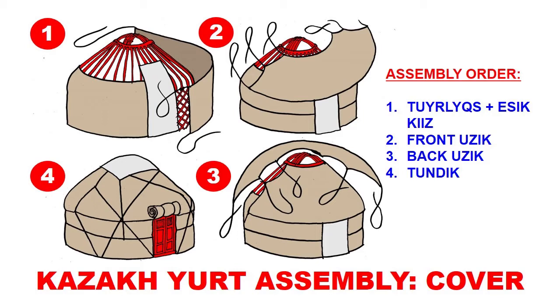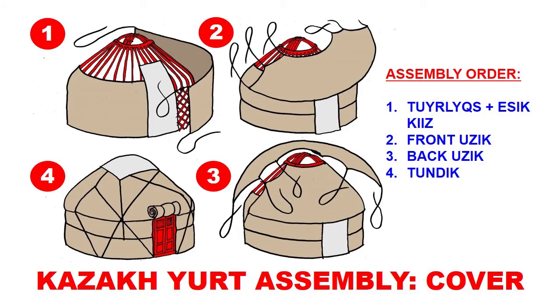Then we dress the roof pieces, starting with the front piece. Once it's tied and secured in place, we put the back roof piece, which overlaps the front piece at both ends on the left and right — so there's no opening. It overlaps securely over a good distance so no precipitation or wind will get inside, and it's tied securely with the attached ropes.